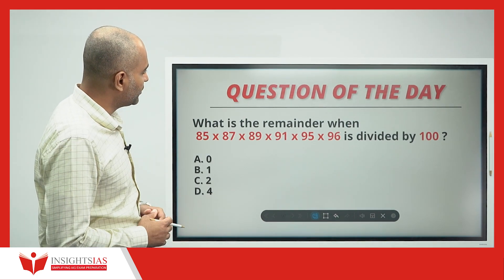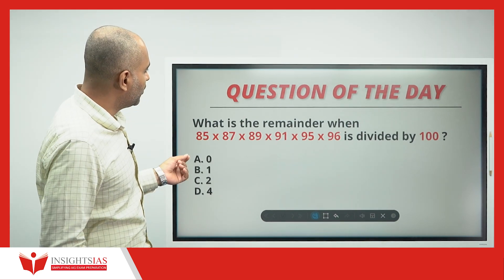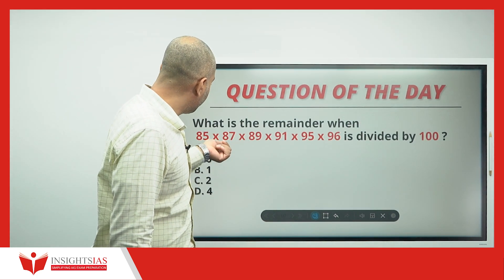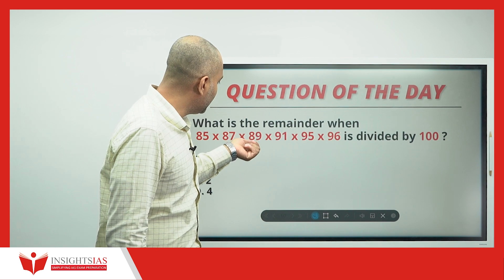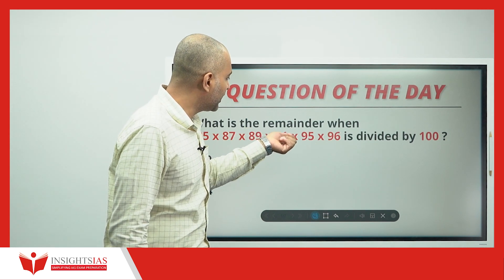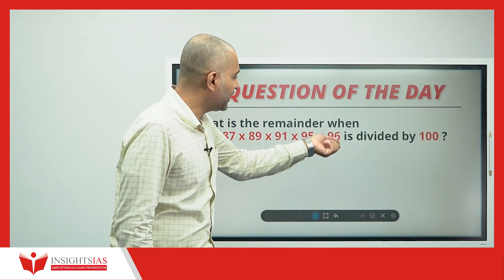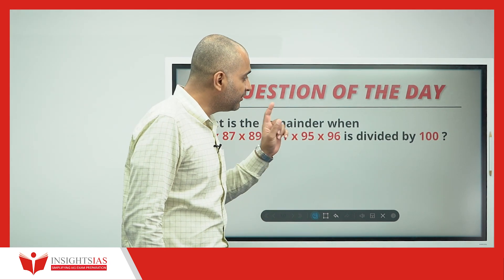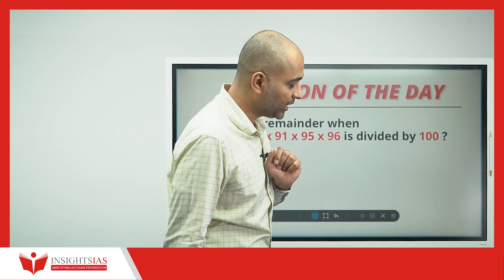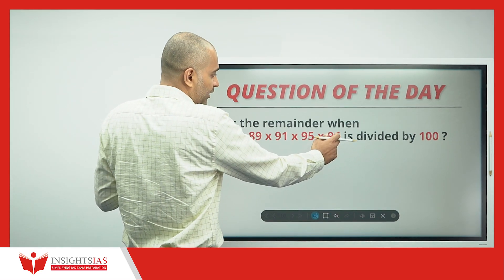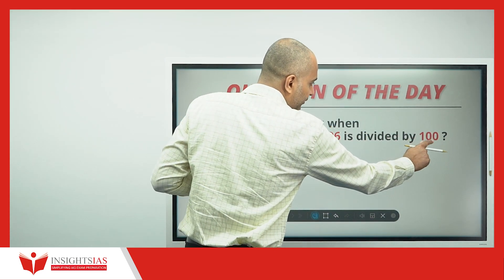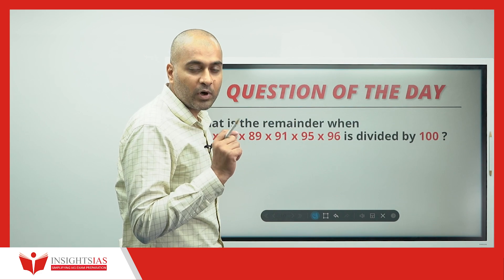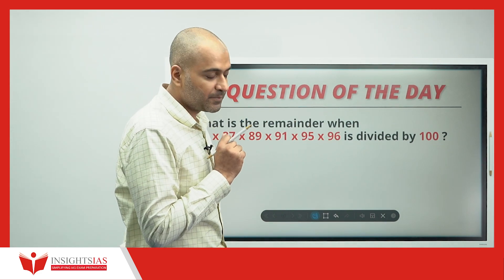Now, this is the first question of the day. What is the remainder when 85 × 87 × 89 × 91 × 95 × 96 is multiplied and divided by 100? Whatever product you are getting, when you divide by 100, what is the remainder?